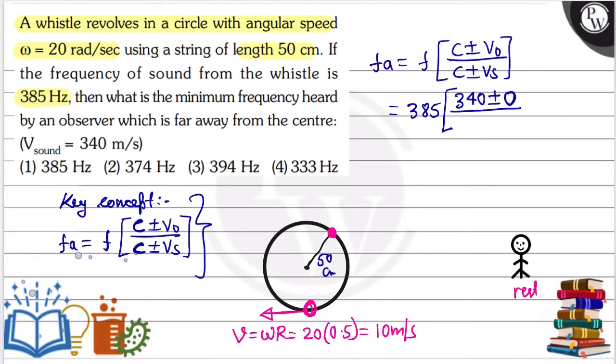Divided by velocity of source—sorry, velocity of sound in air is 340. The velocity of source, this plus or minus will be plus here since the source is moving away.